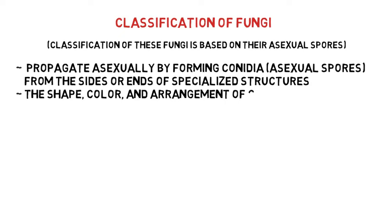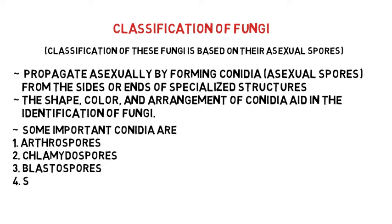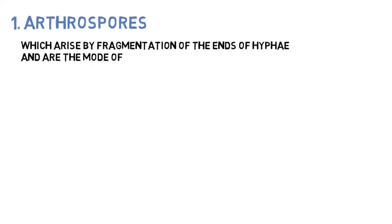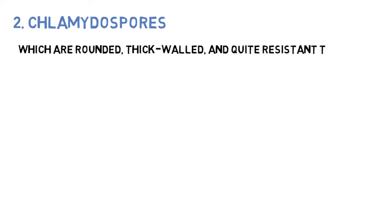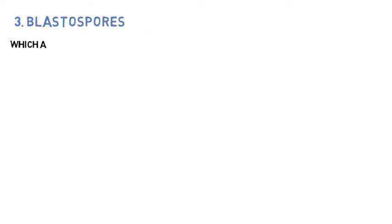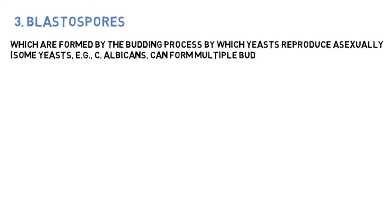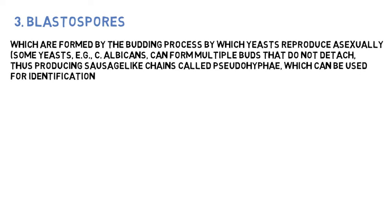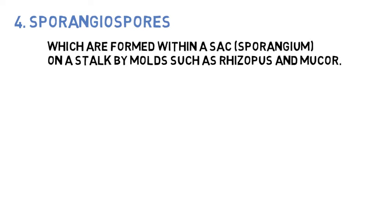The shape, color, and arrangement of conidia aids in the identification of fungi. Important conidia types include arthrospores, chlamydospores, blastospores, and sporangiospores. Arthrospores arise by fragmentation at the end of hyphae and are a mode of transmission of Coccidioides immitis. Chlamydospores are round, thick-walled, and quite resistant; the terminal chlamydospores of Candida albicans aid in its identification. Blastospores are formed by budding, the process by which yeast reproduces asexually. Some yeast such as Candida albicans can form multiple buds that do not detach, exhibiting the phenomenon of pseudohyphae — producing sausage-like chains which help in its identification.